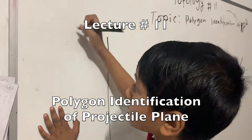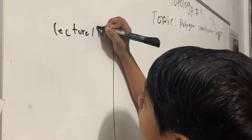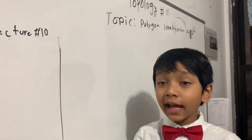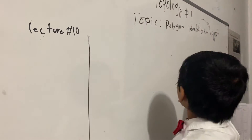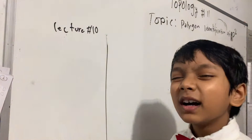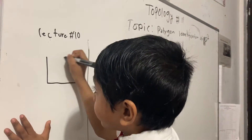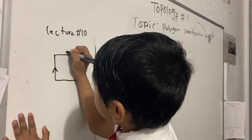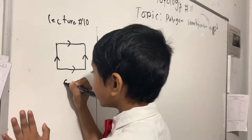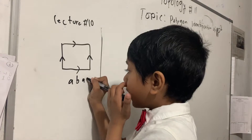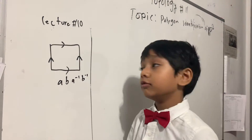I don't know if you saw lecture 10, but don't watch it if you haven't. In lecture number 10 of topology, we were doing the polygonic adaptation of a torus. To summarize, its equation is A inverse B inverse — kind of like the equation we're going to use today.